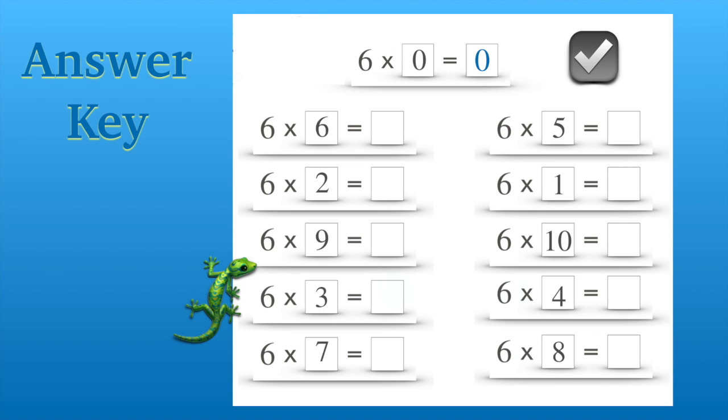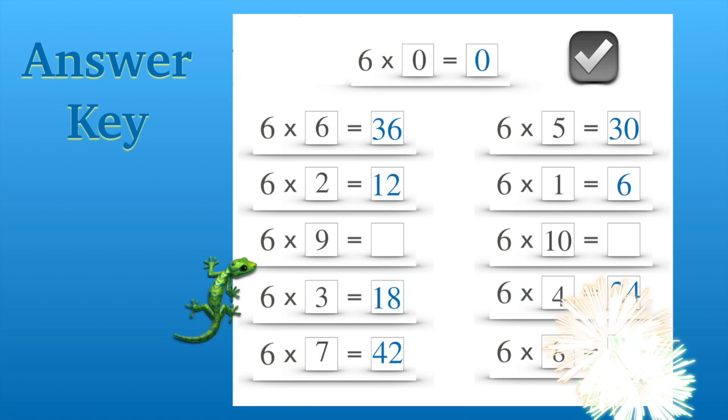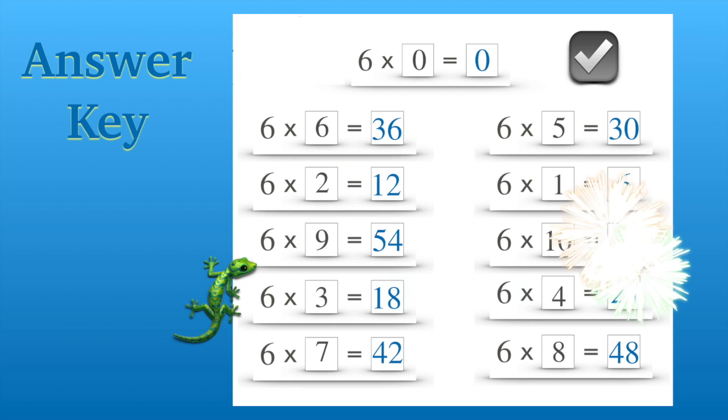Six times zero is zero. Six times one is six. Six times two is twelve. Six times three is eighteen. Six times four is twenty-four. Six times five is thirty. Six times six is thirty-six. Six times seven is forty-two. Six times eight is forty-eight. Six times nine is fifty-four, and six times ten is sixty.